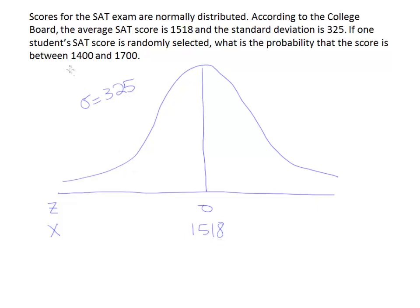Now I'm looking for the scores between 1400 and 1700. Since 1400 is below the mean, I'll put it on the left. 1700 is above the mean, I'll put it on the right.